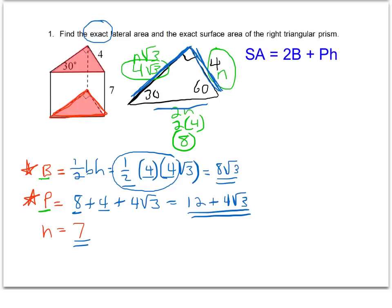Now I have all the values to plug into my surface area formula, and I'll go ahead and simplify that. So my total surface area is 2 times b, 2 times 8 root 3 is my b, plus my perimeter, 12 plus 4 root 3, and that perimeter times the height of 7. It's really important to put the parentheses here.